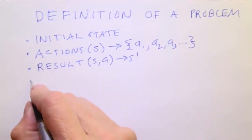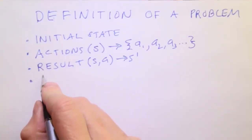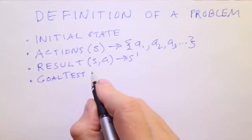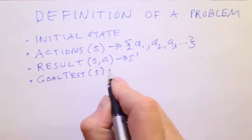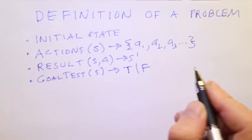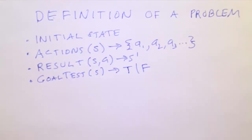Next, we need a function called goal test, which takes a state and returns a Boolean value, true or false, telling us if this state is a goal or not. In the route finding problem, the only goal would be being in the destination city, the city of Bucharest, and all the other states would return false for the goal test.